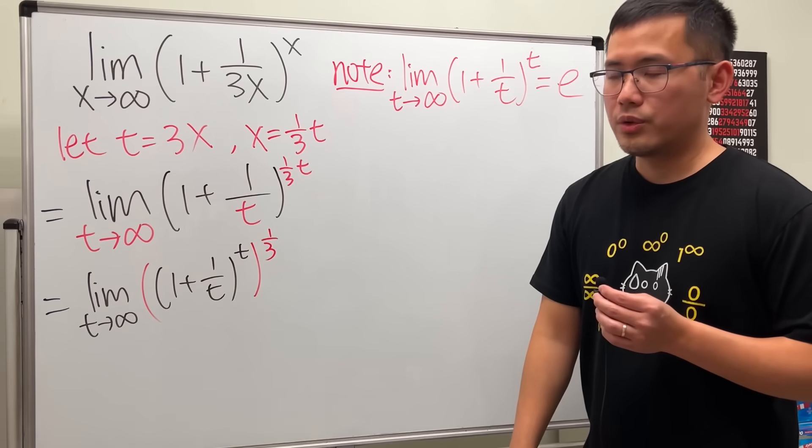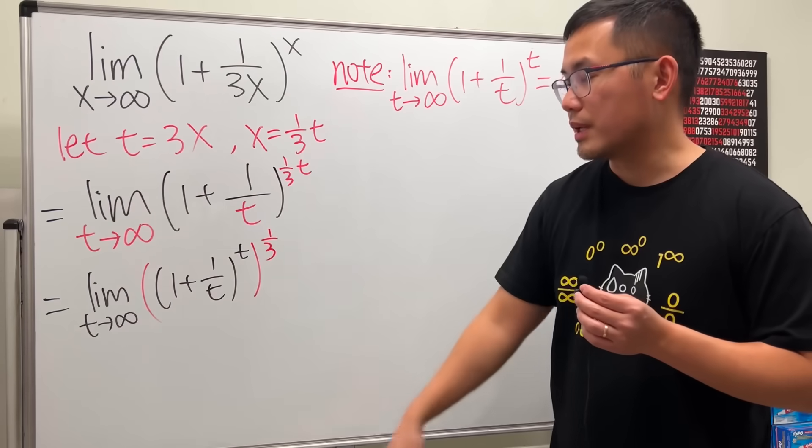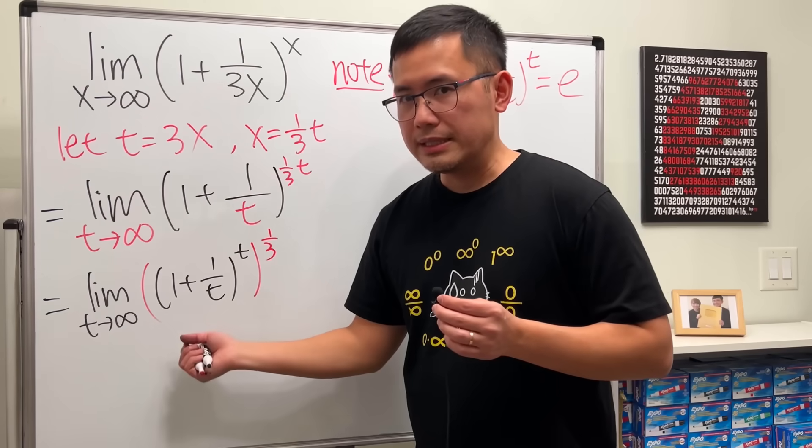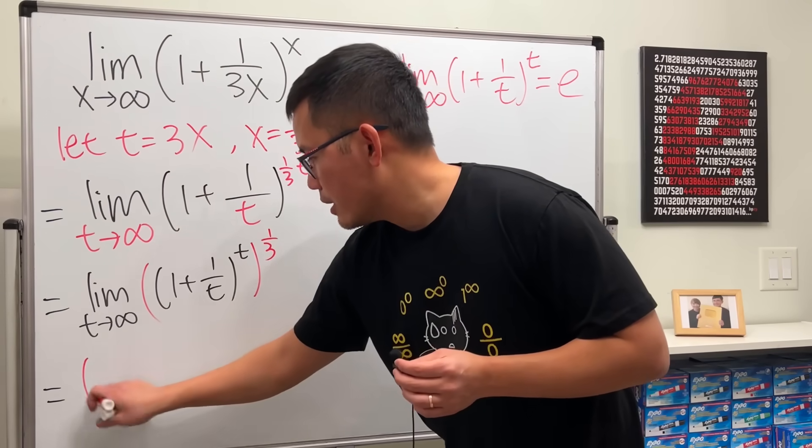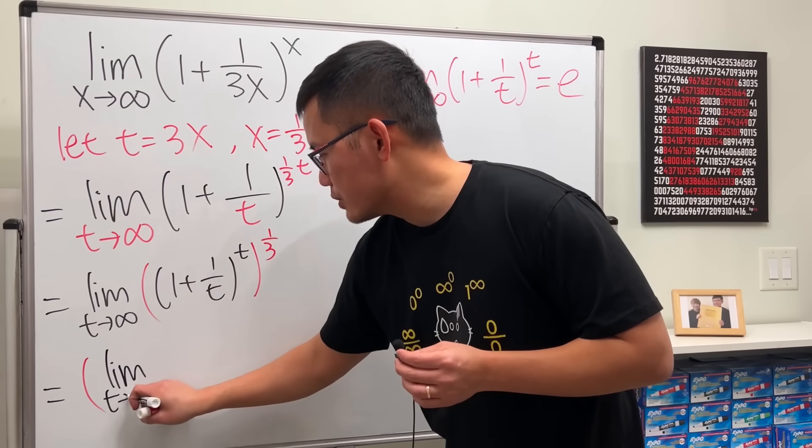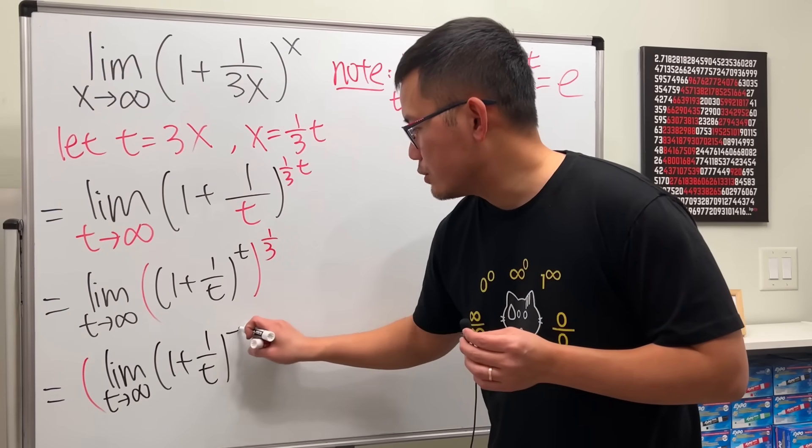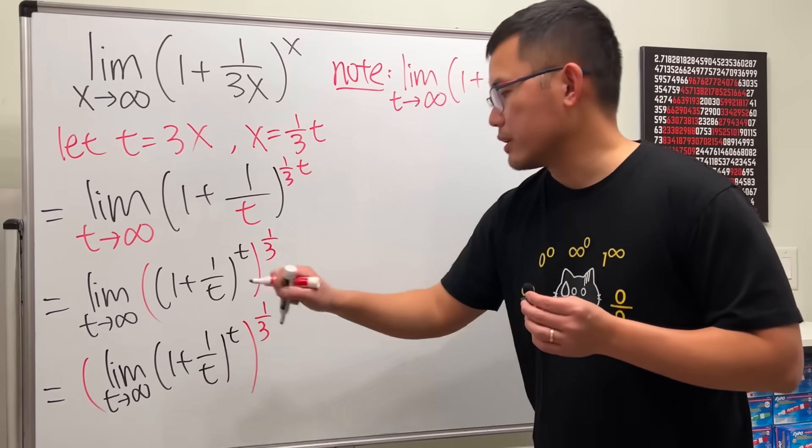Now, secondly, this is what we can do. This is a continuous function as t goes to infinity, t is not 0. So we can just put the limit inside. Have a look. This equals the limit as t goes to infinity of 1 plus 1 over t raised to the t's power, and then do the 1 over 3 power outside.